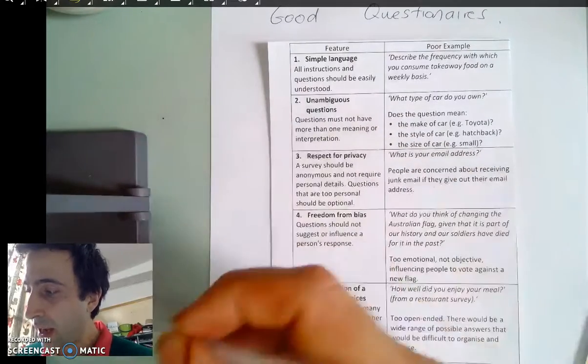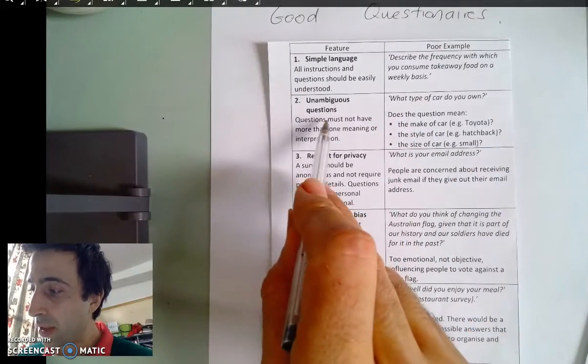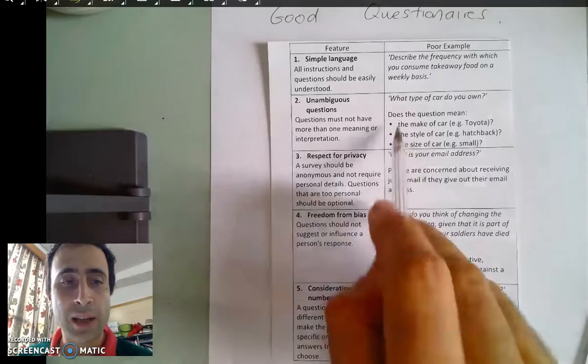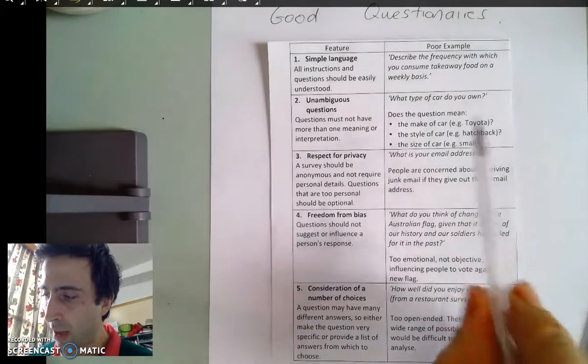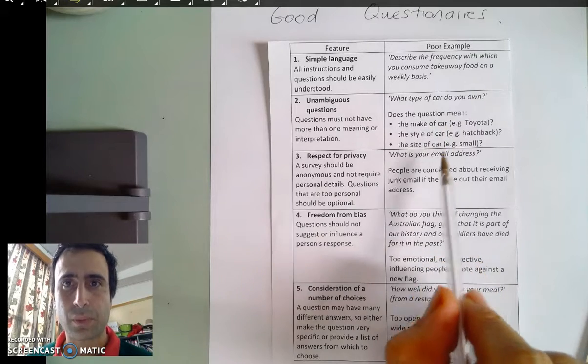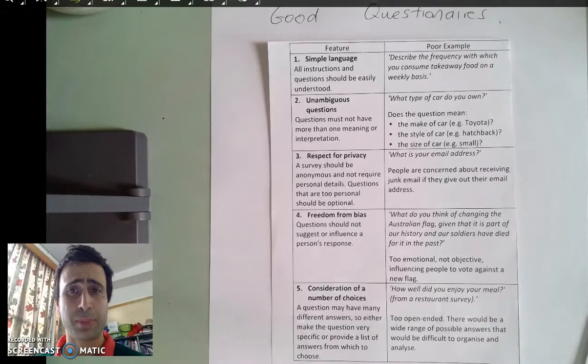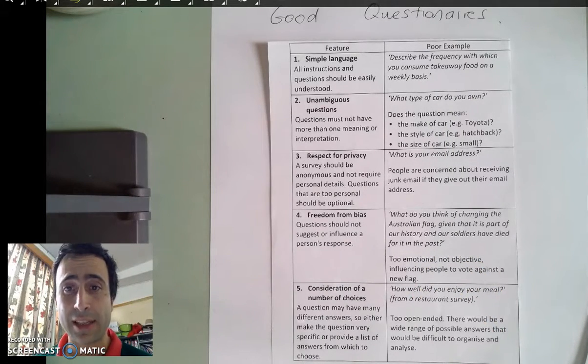An unambiguous question example: 'what type of car do you own?' In this case, do you mean the make of the car, the style of the car, the size of the car? There are plenty of different ways that people can take that question.